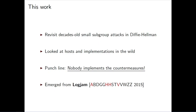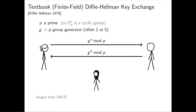Let's cover Diffie-Hellman key exchange. The setting is that we have our usual class of characters: Alice, Bob, and Eve the eavesdropper. Alice and Bob want to negotiate some shared secret, and Eve listens in on every message they send to each other. So Alice and Bob agree on some group parameters — a prime P and a generator G. You can think of G as being two, since that's often a good choice.